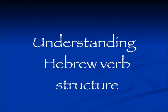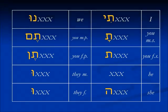Shalom. We are continuing in our series of understanding Hebrew verb structure. We are working in the perfect or past tense. I hope today that we will finish whatever is left over. Remember that the past tense is indicated by a suffix. These suffixes are listed here. They are always the same regardless of the binyan. We will always see these suffixes in the perfect tense.